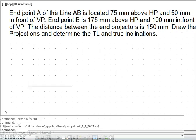Endpoint A of the line is located 75 mm above HP and 50 mm in front of VP. This information, above HP and in front of VP, makes it clear that we have the point in the first quadrant. Endpoint B is also above HP and in front of VP with certain distances, so that point is also in first quadrant.